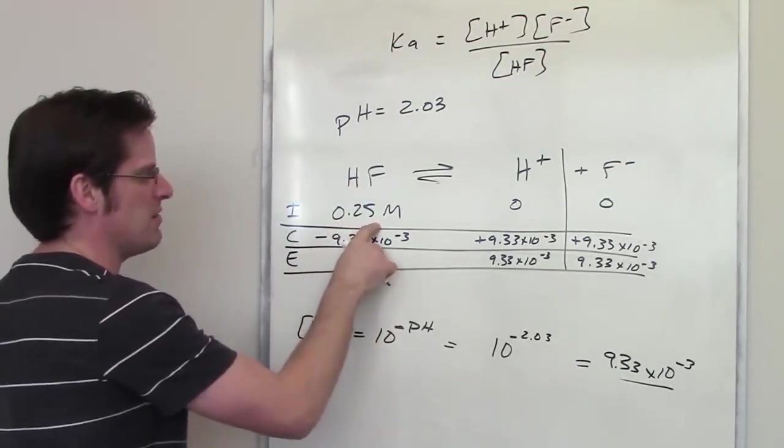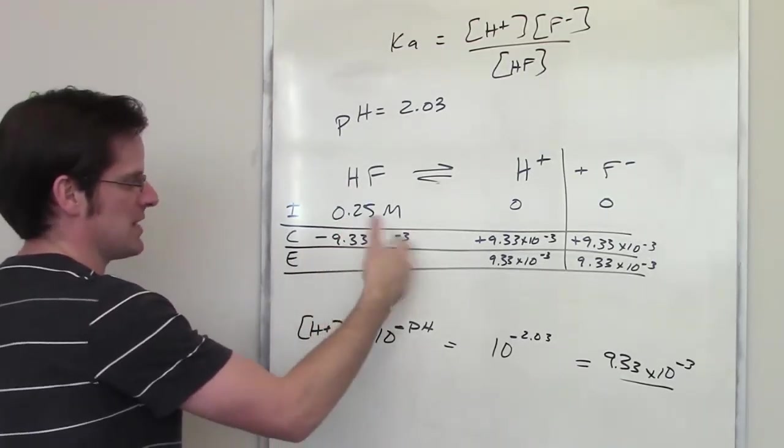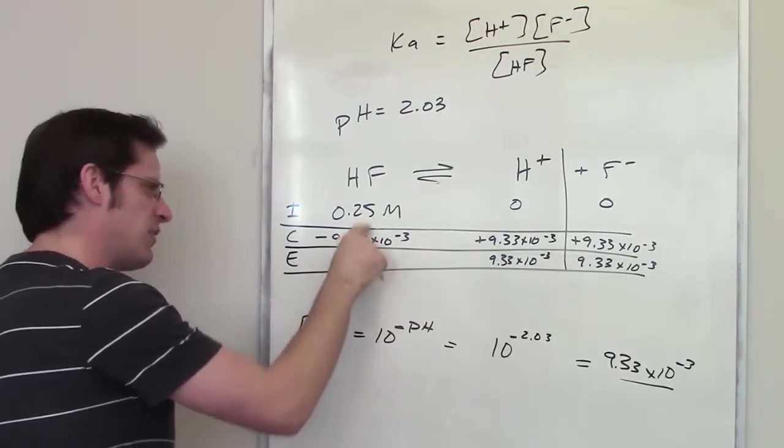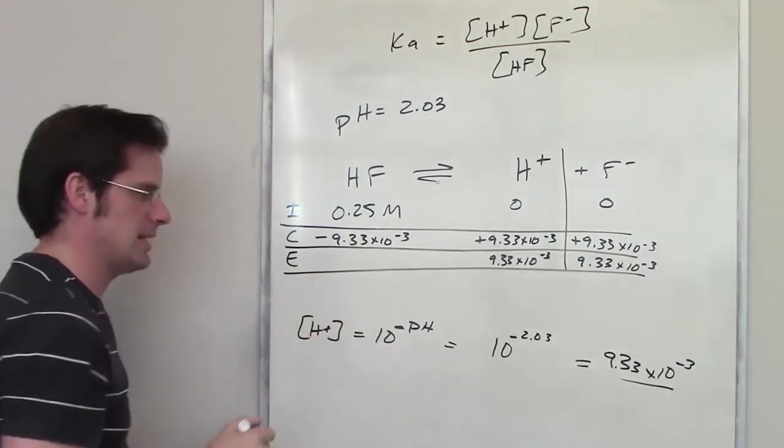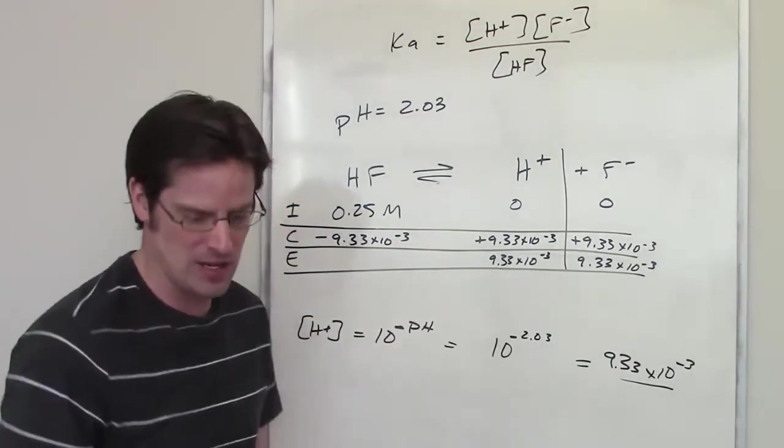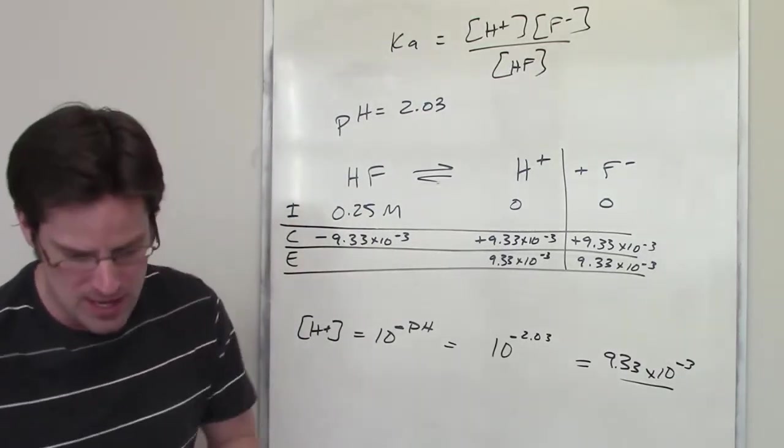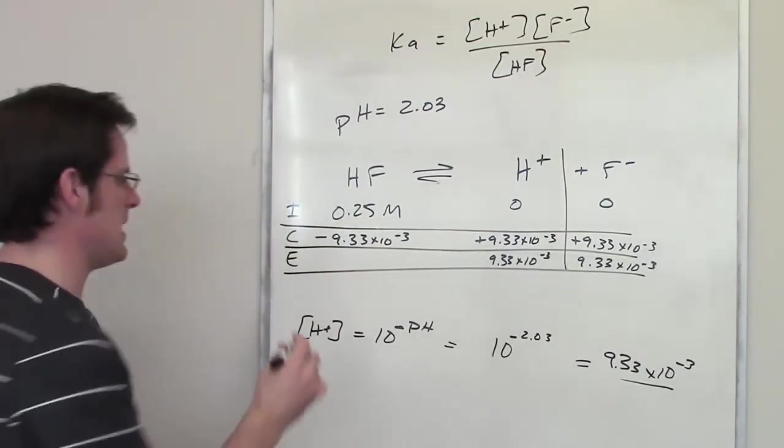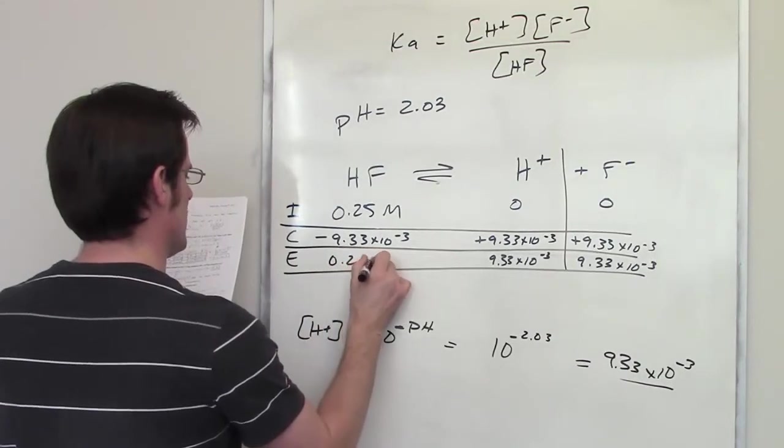I just take 0.25 and subtract 9.33 times 10 to the negative third from it. And the difference between these two, well, that's going to be the final equilibrium concentration of HF. Now I happen to have done that earlier, and that number ends up coming out to be 0.2407.